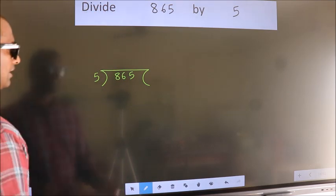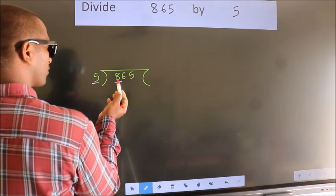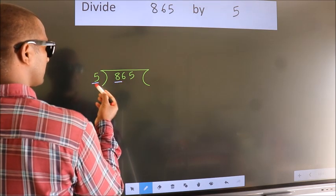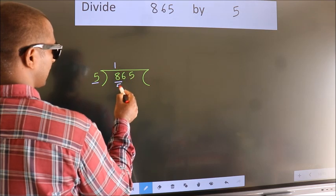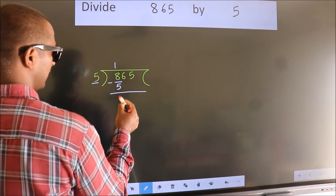Next. Here we have 8, here 5. A number close to 8 in 5 table is 5 once 5. Now, we should subtract. We get 3.